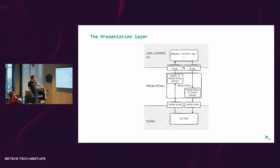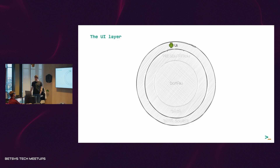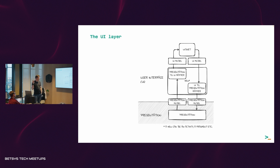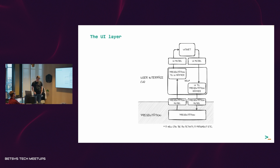The UI layer is what everybody's familiar with — fragments, composables, view bindings, data bindings, and so forth. Until recently there was only one choice; now Compose seems to be all the rage. Switching UI frameworks is actually a good test of your architecture. At Kiwi, we switched our entire ancillaries codebase from the view framework to Compose. If it goes really smoothly, your architecture is good. If not, you might have issues in the higher layers.